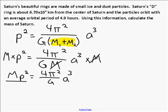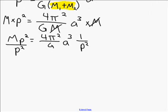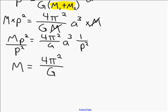So now I need to divide both sides by period, and that will leave mass by itself. So that's the same thing as multiplying this side by one divided by p squared. So mass of Saturn by itself is equal to 4 pi squared divided by g, and I'm just going to move this so I have a cubed over p squared.